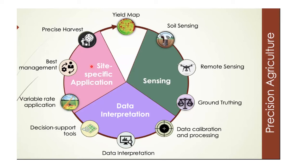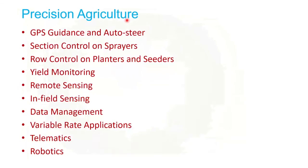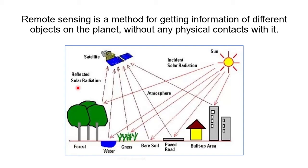Remote sensing is one of the tools of precision agriculture — in fact, it is one of the most fundamental and important parts of precision agriculture today. Remote sensing is a method for gathering information about different objects on the planet without any physical contact with them. Without physical contact, we collect data about our planet — it could be trees, water, grass, bare soil, roads, or buildings.